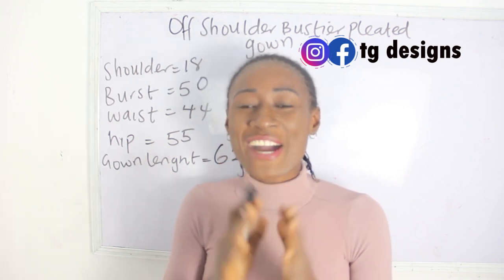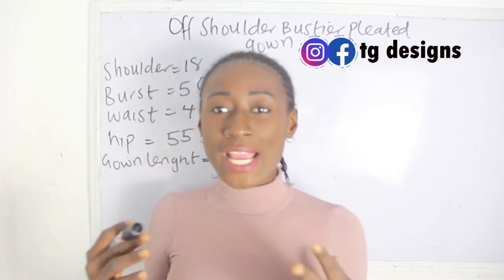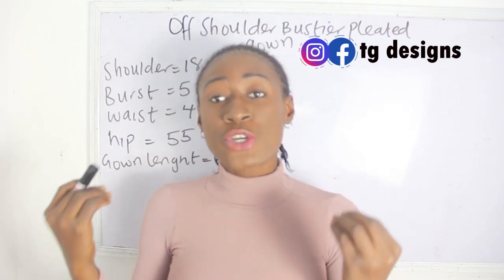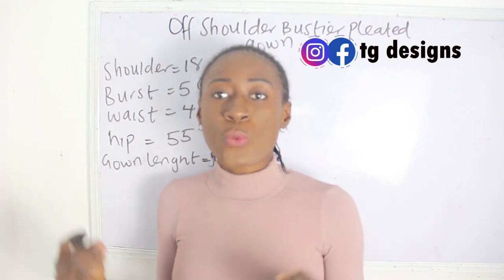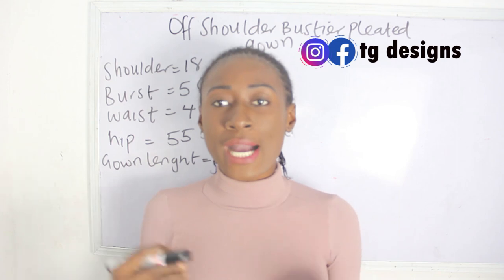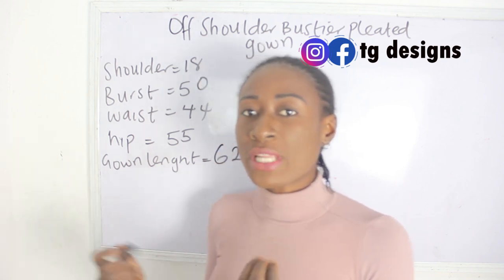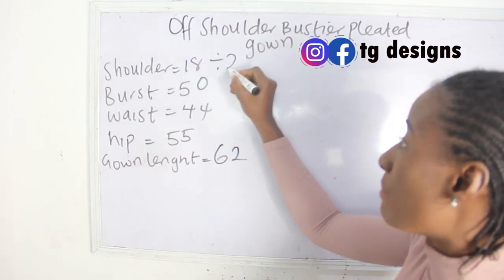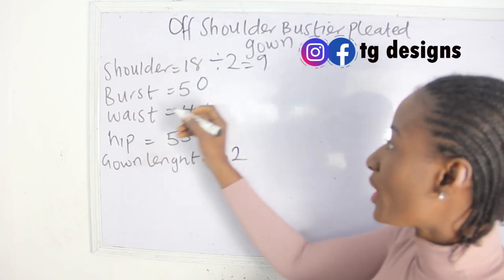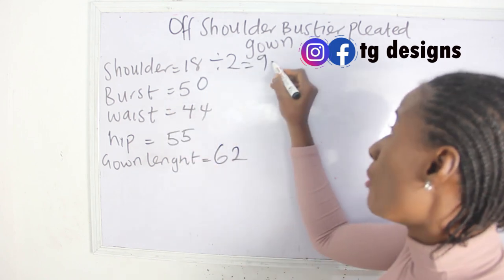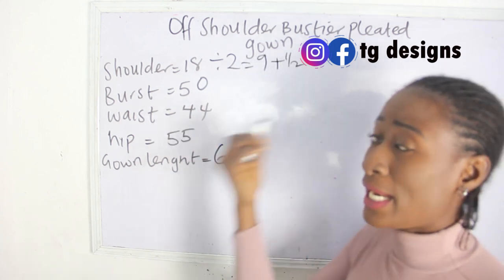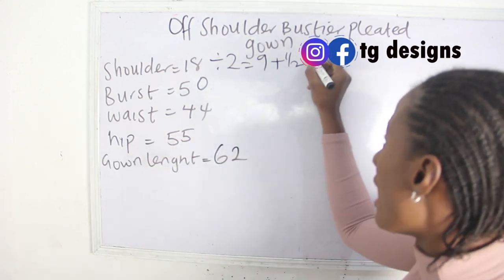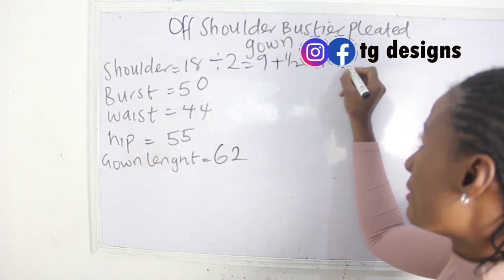Let's go ahead now. What are the measurements required in order for you to achieve this style? You need your shoulder measurements, bust, waist, hip, and your gown length. Our shoulder measurement is 18; 18 divided by 2 gives us 9, plus 1.5 inch for our allowance because we are going to be attaching our sleeve. So you have 9.5.